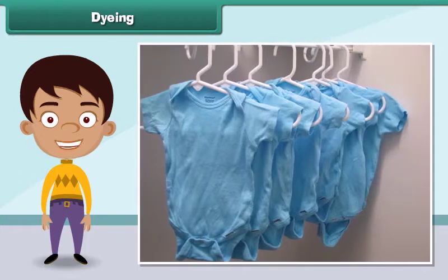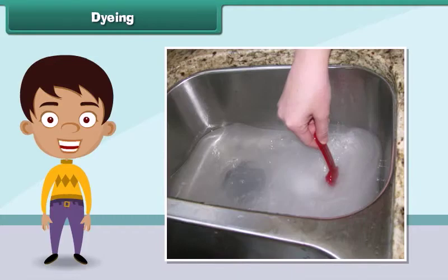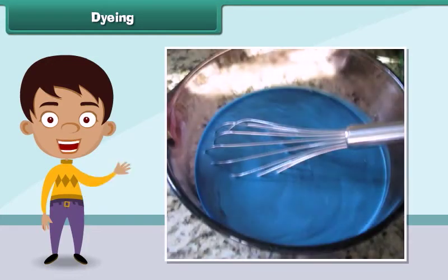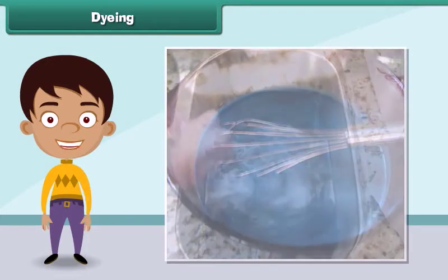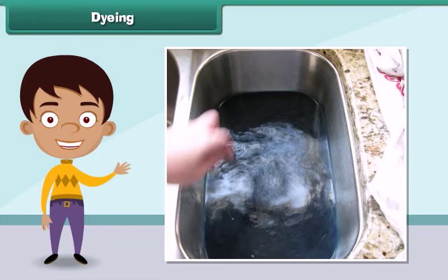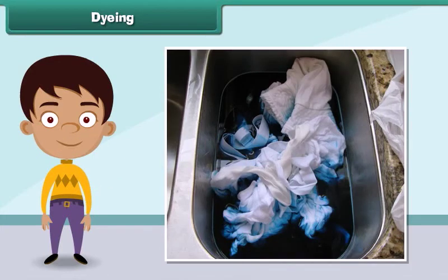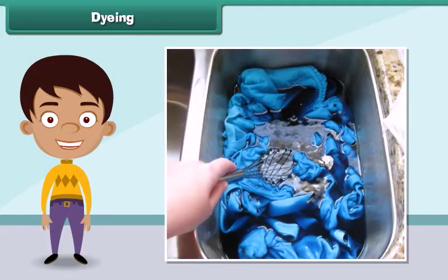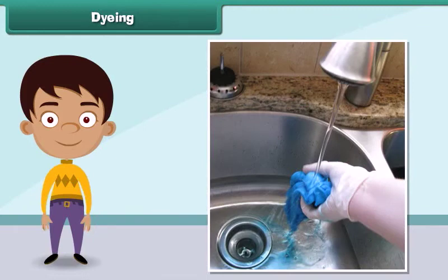Dyeing a fabric means giving a new color to the fabric. To dye a fabric, first a solution of dye and salt in warm water is prepared. Next, the fabric is dipped in the solution. Then the fabric is removed from the solution after an hour and washed. Finally, the fabric is dried.